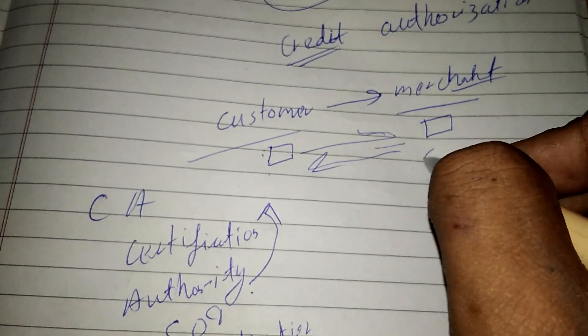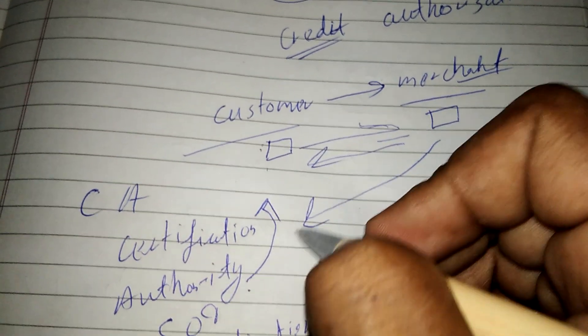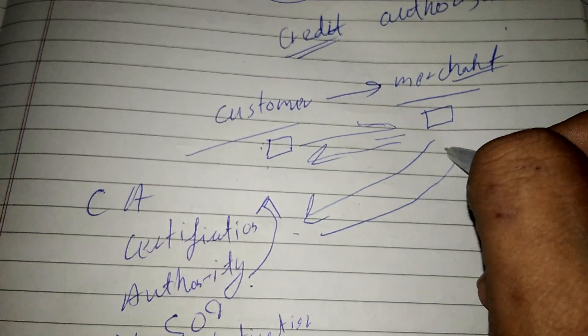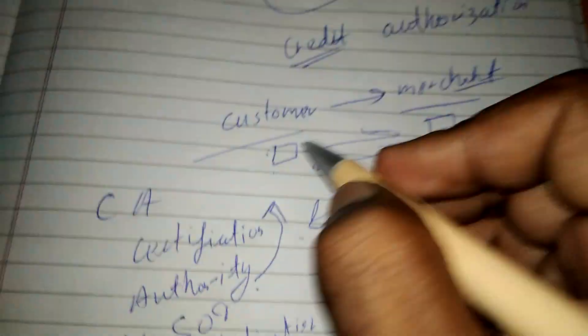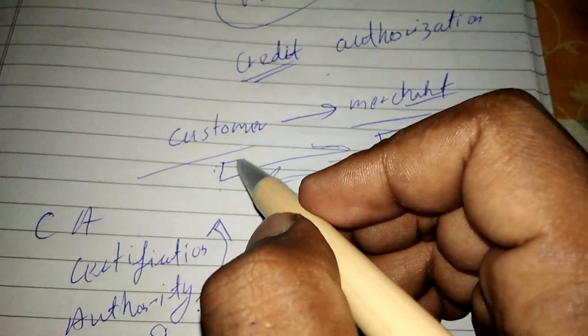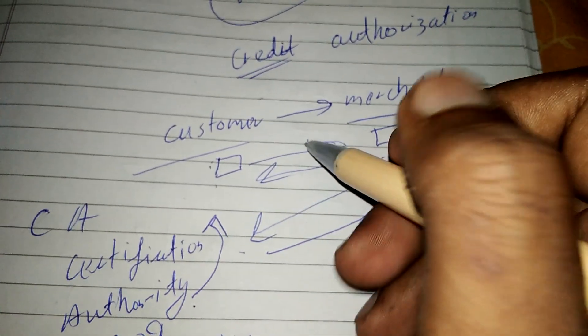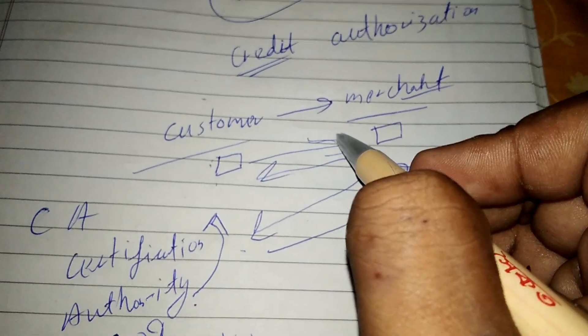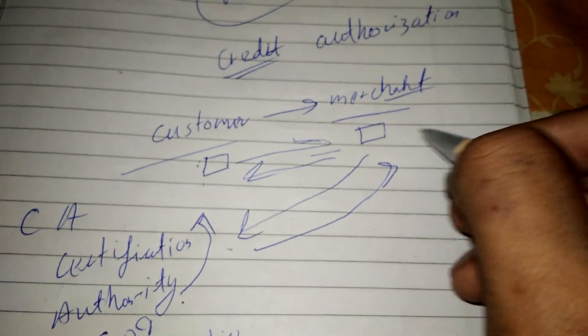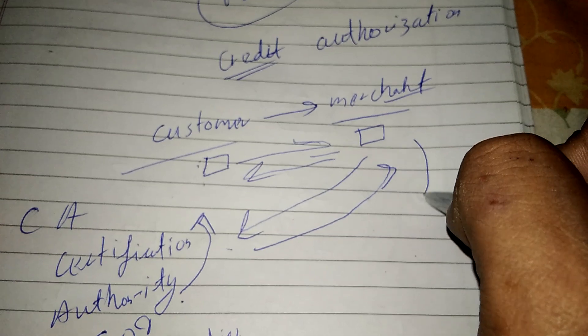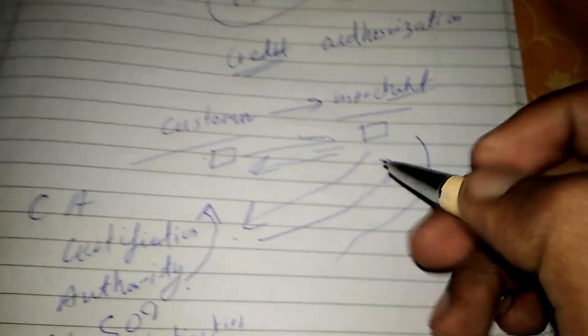Then the merchant verifies this and sends a confirmation. If the user had communicated before, they will not be needing to share the credit card details. The merchant will already have the credit card details.